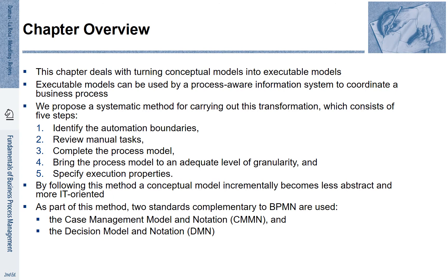We propose a systematic method. This method helps us to transform the conceptual to an executable process model. It considers five steps: identifying the automation boundaries, reviewing the manual tasks, completing the process model, bringing the model on the adequate level of granularity, and specifying execution properties. By following this method, the conceptual model incrementally becomes less abstract and more IT-oriented.